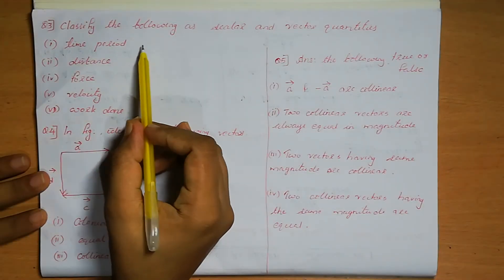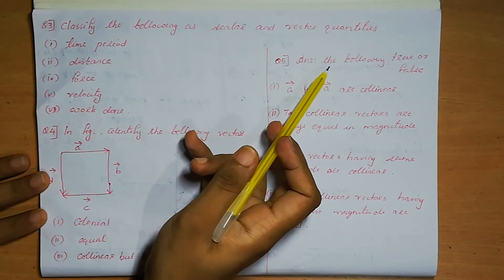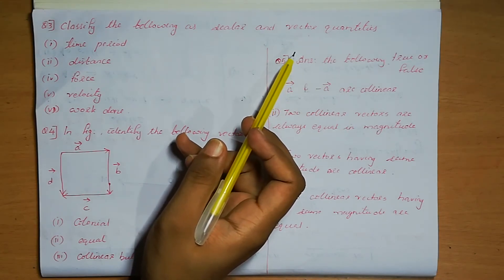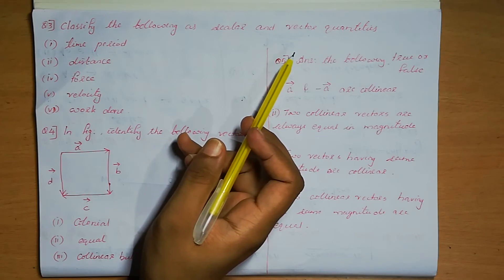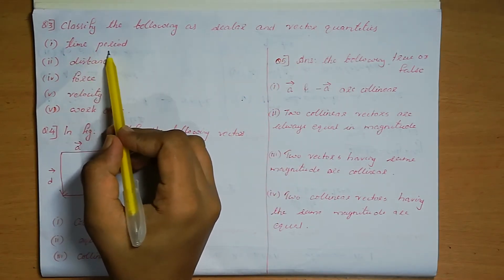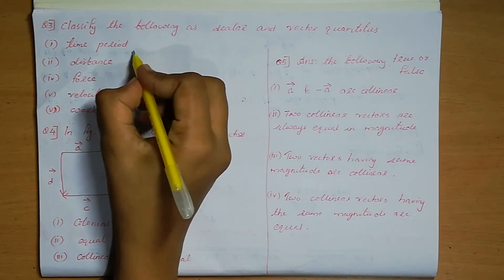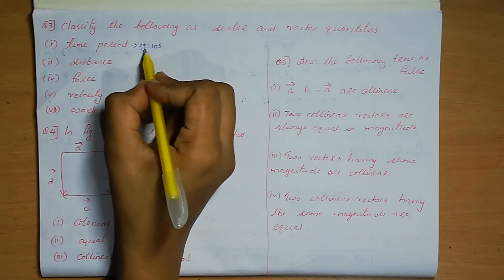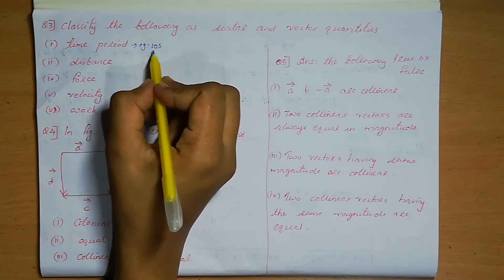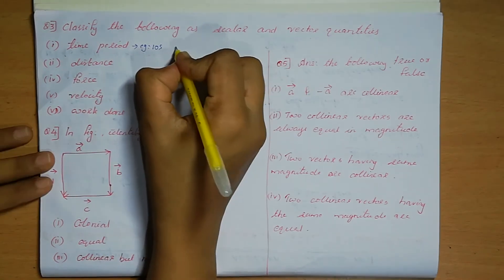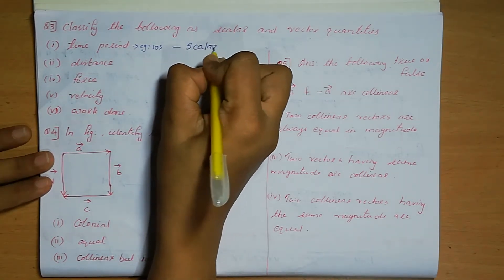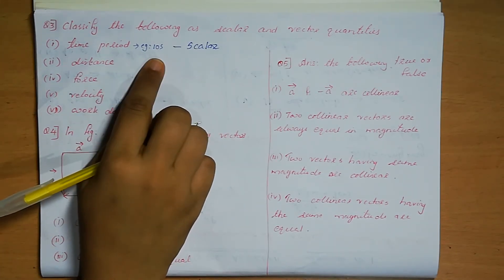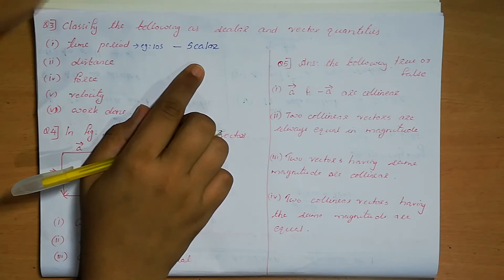Question number 3. Classify the following as scalar and vector quantities. A quantity which has only magnitude is called scalar; a quantity which has magnitude as well as direction is called vector. First one is time period. For example, 10 seconds or 1 hour — it has only magnitude, which is 10, and there is no direction mentioned. So time period is a scalar quantity.